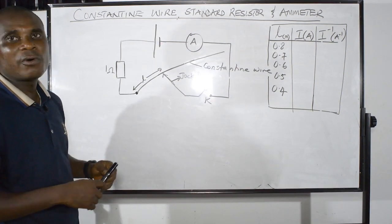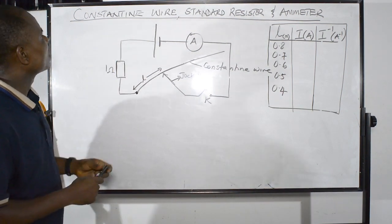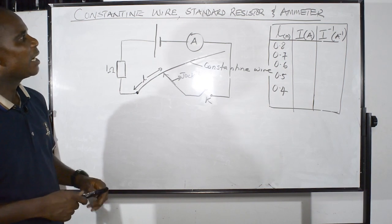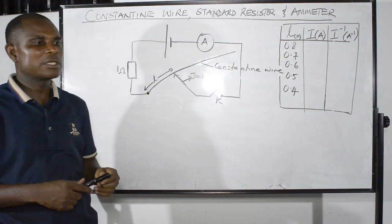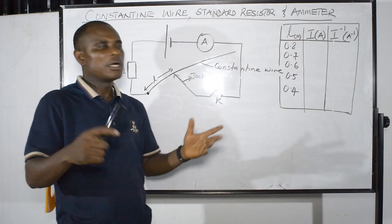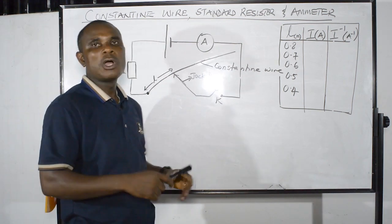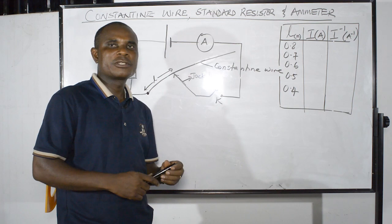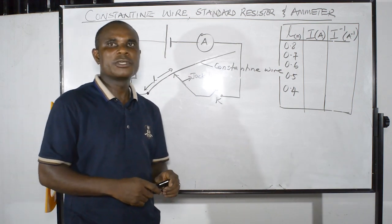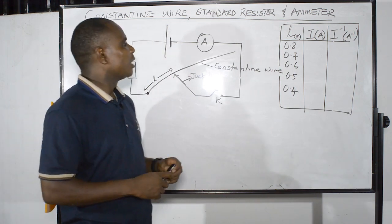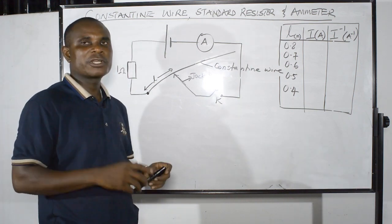We have done the first circuit involving the resistance box. Now we want to look at a constantan wire, standard resistor, and an ammeter. I told you what an ammeter is and what it does — it measures current. It is always connected in series with the circuit, and the voltmeter is always connected in parallel.